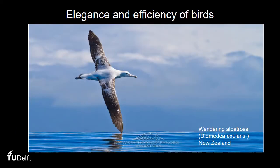Before we dive into the presentation, let's look at an example from nature. In this picture we see the wandering albatross, also called New Zealand albatross, found in the New Zealand waters in the Pacific Ocean.